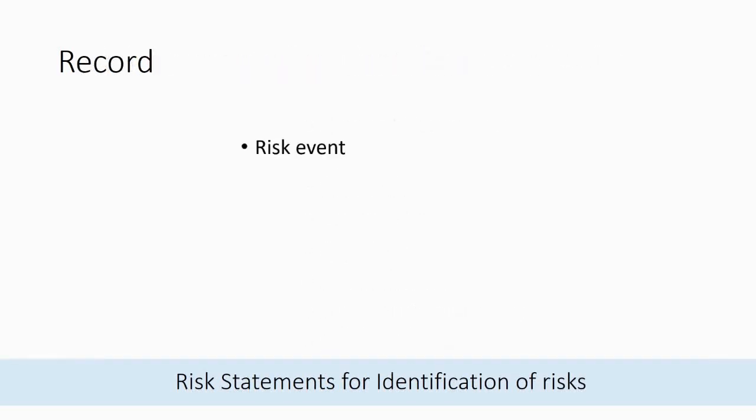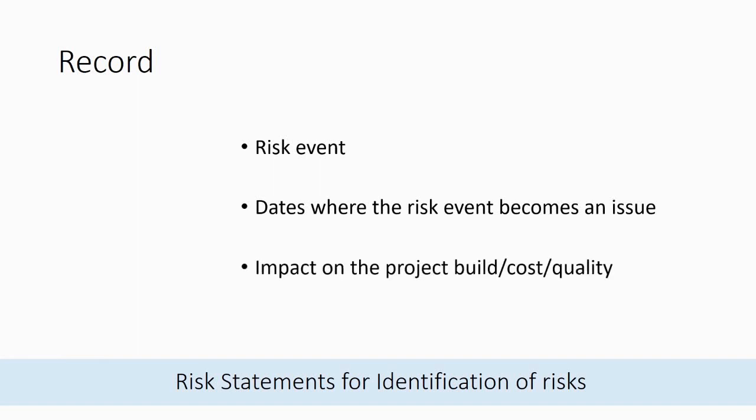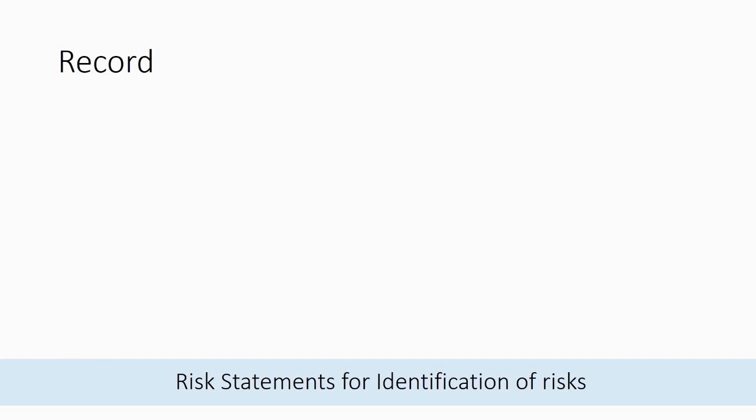Identify risk events, dates where the risk becomes an issue, the impact on the project build cost or quality, and then estimate a probability that the risk will occur. Create a table of these risks and review and monitor this table of risks at each project management meeting.